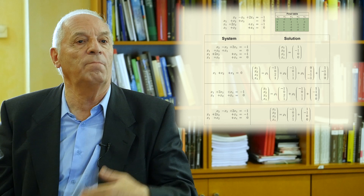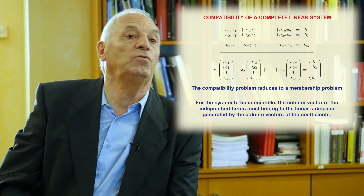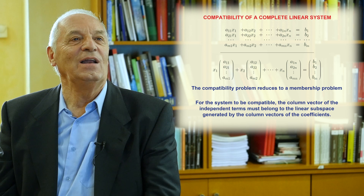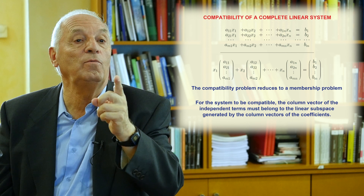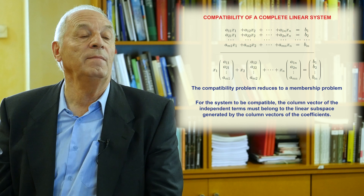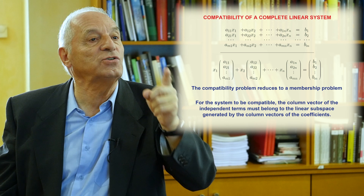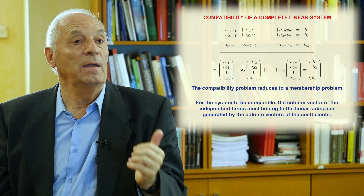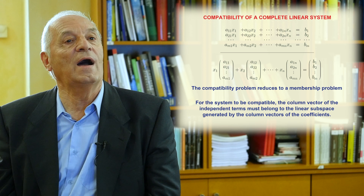Another problem is compatibility. Assume you have a system of equations and want to know the conditions under which b1, b2, ..., bm give a compatible system. The system can be rewritten to say that the vector V = (b1, ..., bm) is a linear combination of the column vectors of the coefficient matrix with coefficients x1, x2, ..., xn. So the system is compatible if and only if the vector V belongs to the linear subspace generated by the columns. The problem of compatibility reduces to a membership problem that we have studied before. This ends the summary of this course.